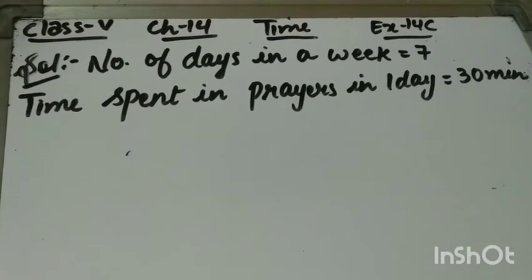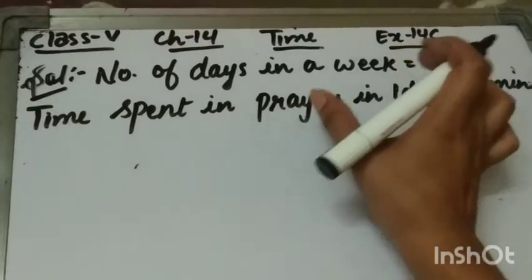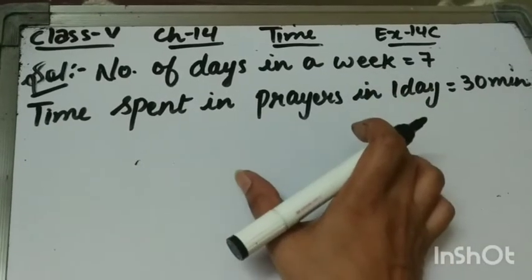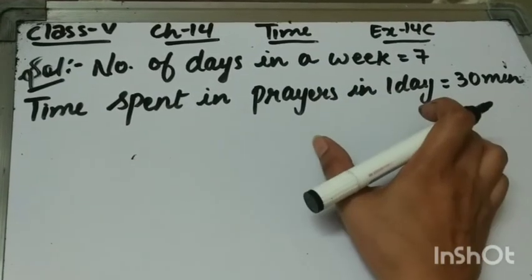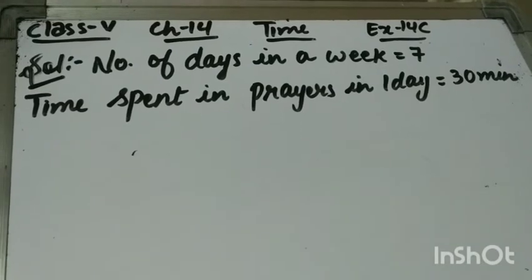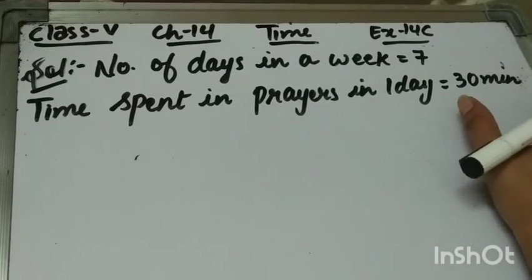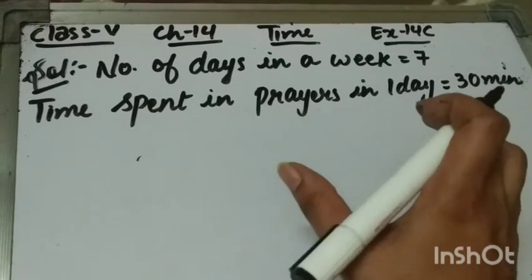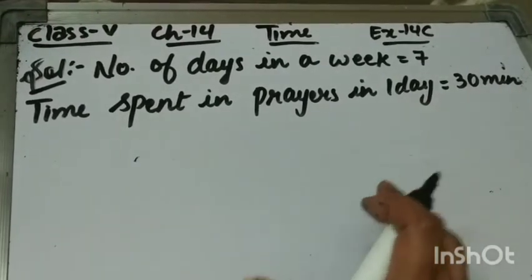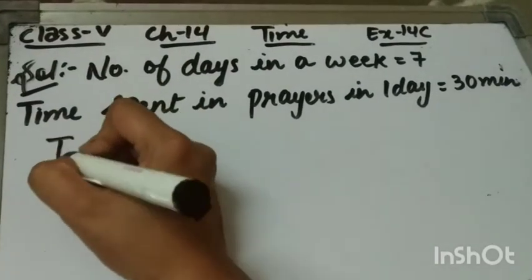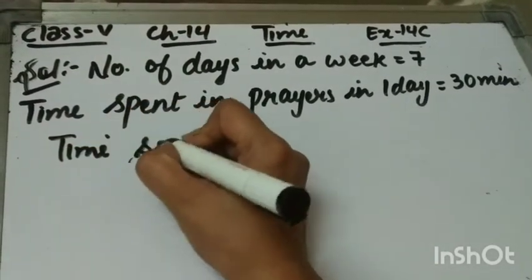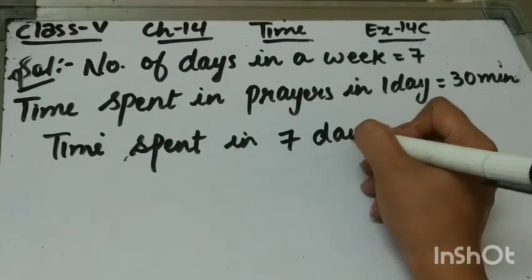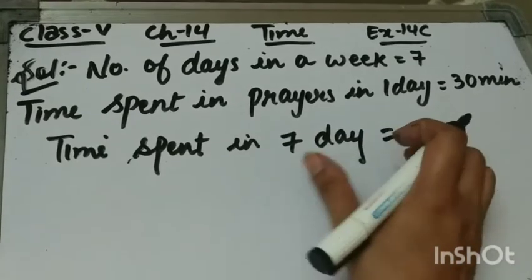The number of days in a week is equal to 7. So you will write: number of days in a week is 7. And time spent in prayers in 1 day is 30 minutes. We have to find the time spent by him in 1 week, so you will write: time spent in 7 days, because 1 week is equal to 7 days.